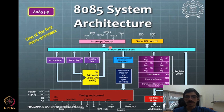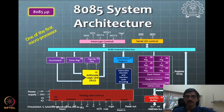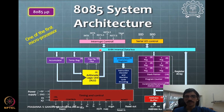Modern microcontrollers don't show this kind of detailed block diagram. They give a higher-level or next-layer block diagram and may not show you all these registers. Looking at the 8-bit data bus and the 16-bit address bus — for example, AD15 indicating a 16-bit address bus in the 8085 architecture — these detailed specifications may not be present in modern microcontroller data sheets.